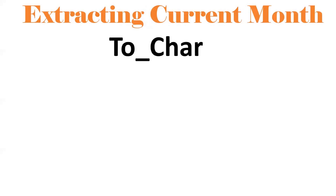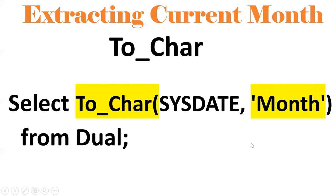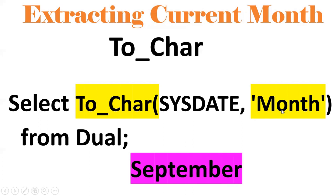How to extract the current month? Using TO_CHAR functionality: SELECT TO_CHAR(SYSDATE, 'MONTH') FROM DUAL. The current month is September. TO_CHAR is very important in real-time use. If you put 'DY' it gives Saturday; if you put 'MONTH' it gives September. You can extract hours and minutes, day, or month as needed.